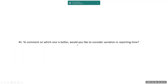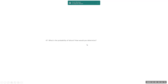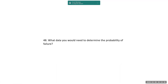To comment on which one is better, would you like to consider a variation of reporting time? Yes. How would you measure the variation of reporting time? Sample data — standard deviation. What is the probability of failure? How would you determine it? The probability of failure is obtained from sample testing. What data would you need? Sample size, number of samples, and the mean value of the samples.